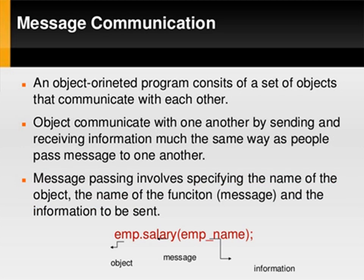The last concept of OOPs is message communication. Objects communicate with one another by sending and receiving information, the same way people pass messages to one another. There are three steps: first, specify the object name; second, specify the function; third, specify the information to be sent. For example, with an employee object: the first step specifies the employee name as the object name, the second step calculates the salary as the function, and the third step sends the employee name and salary information to another object.